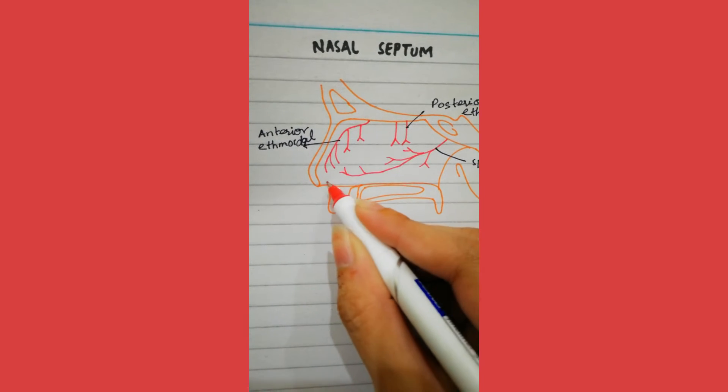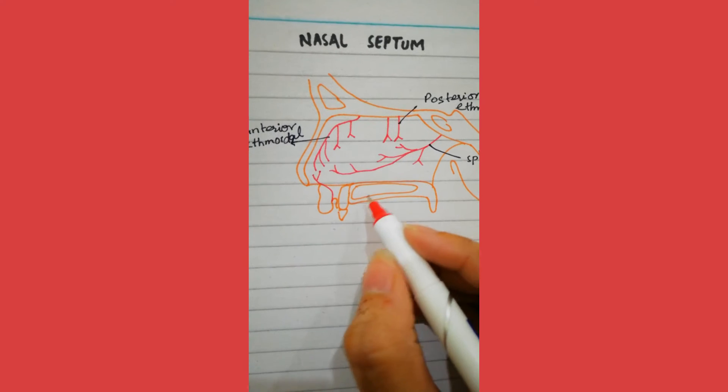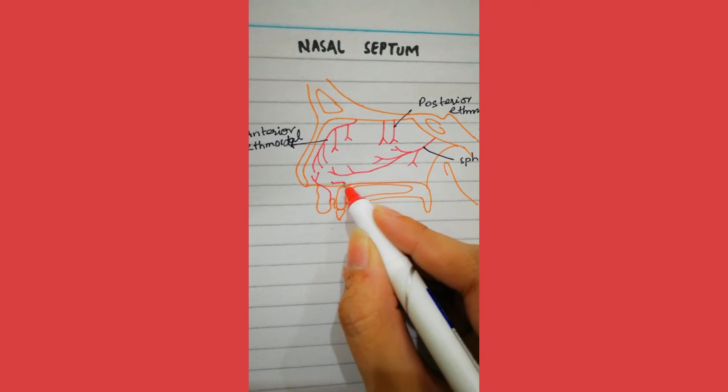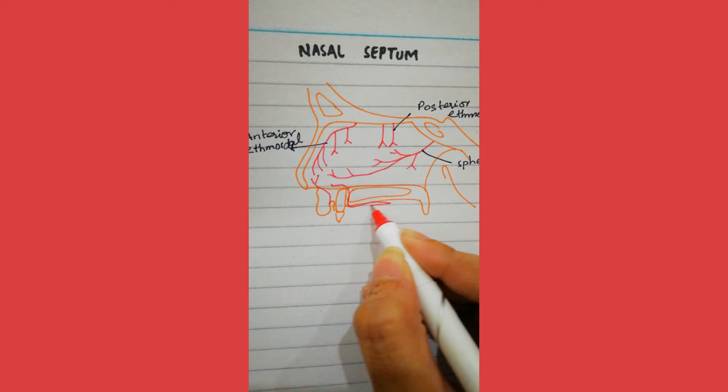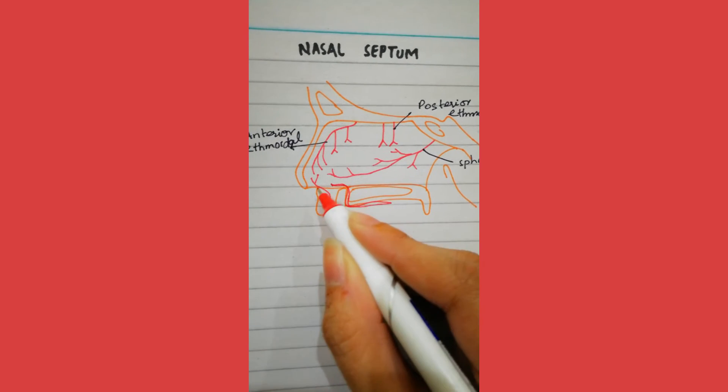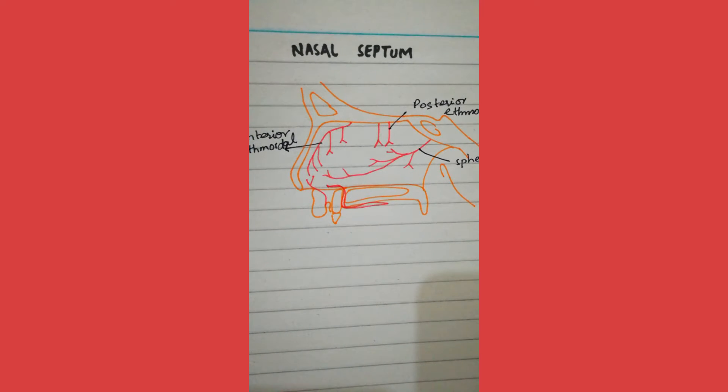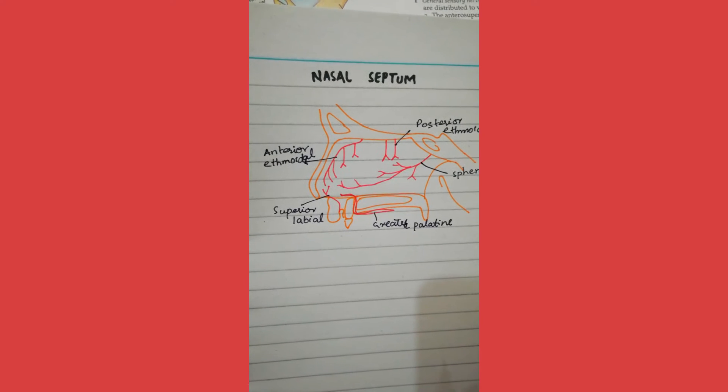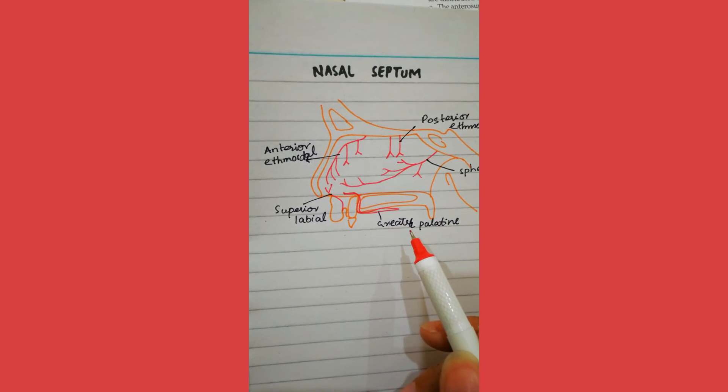Then we have the superior labial and the greater palatine artery. Here is the palate, so this will be the greater palatine artery. Let me label it first. Now this is the superior labial and the greater palatine.